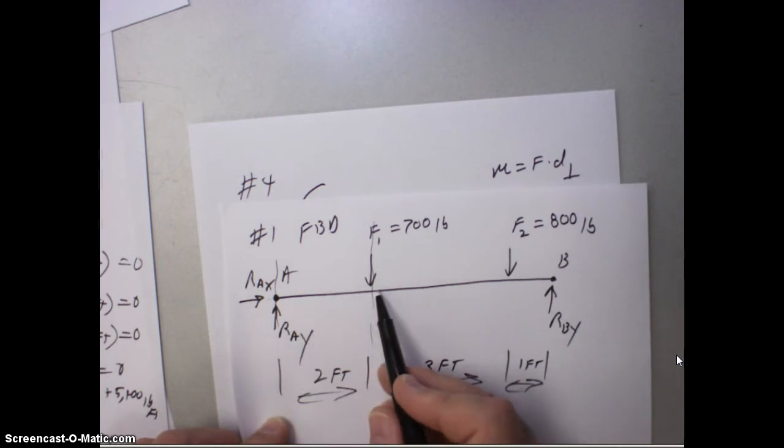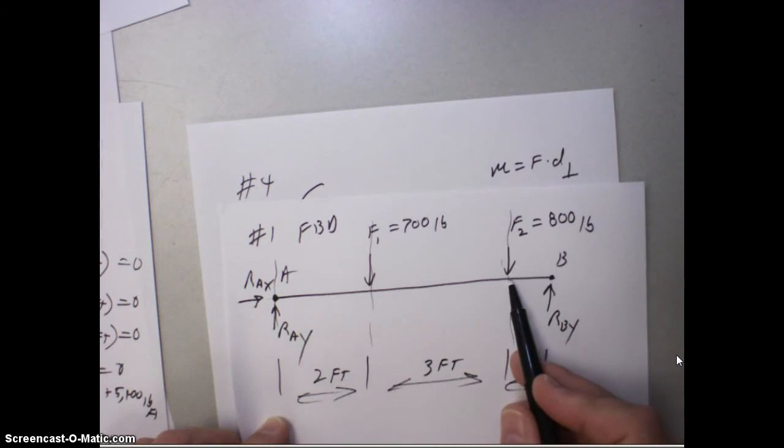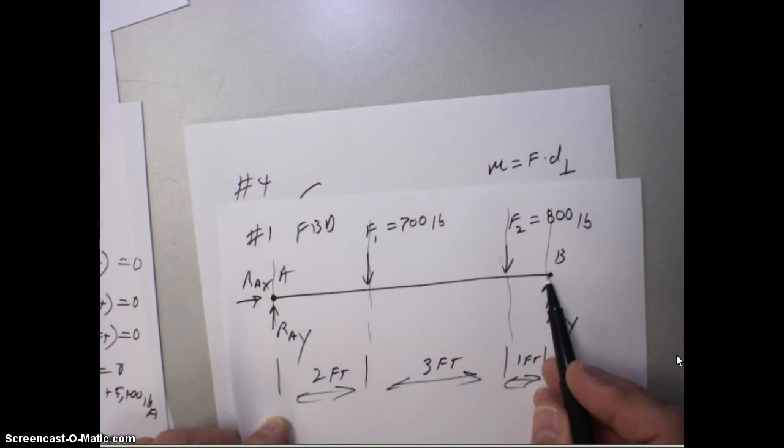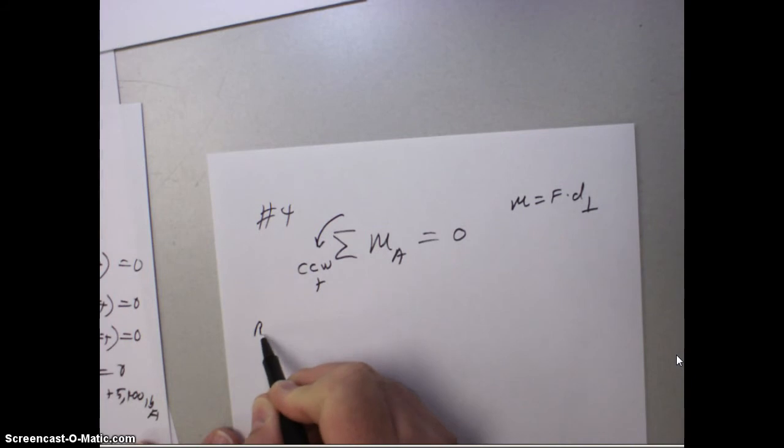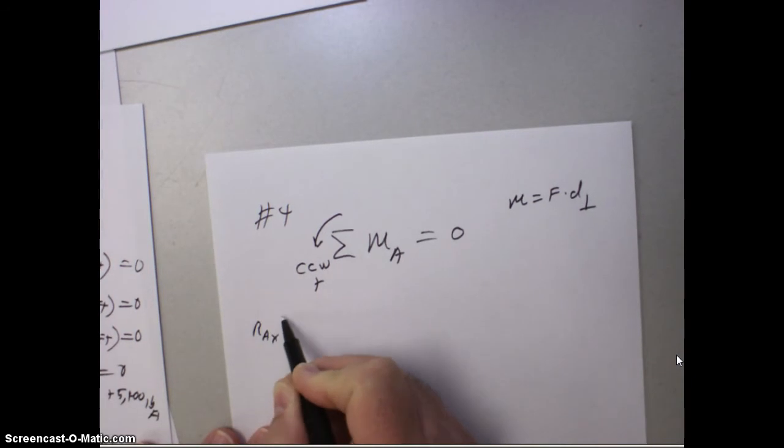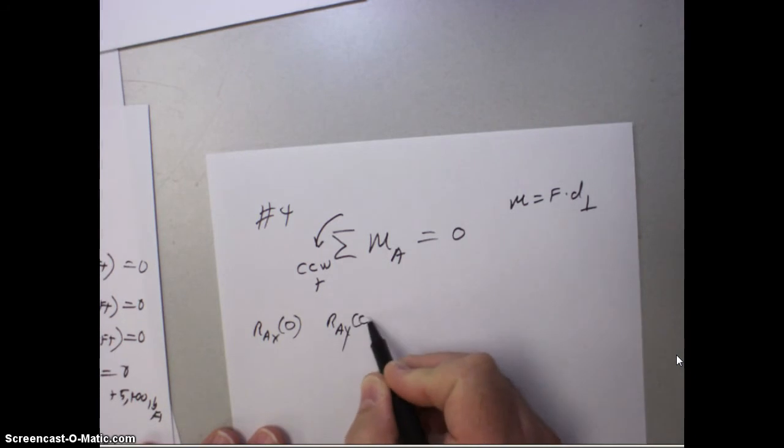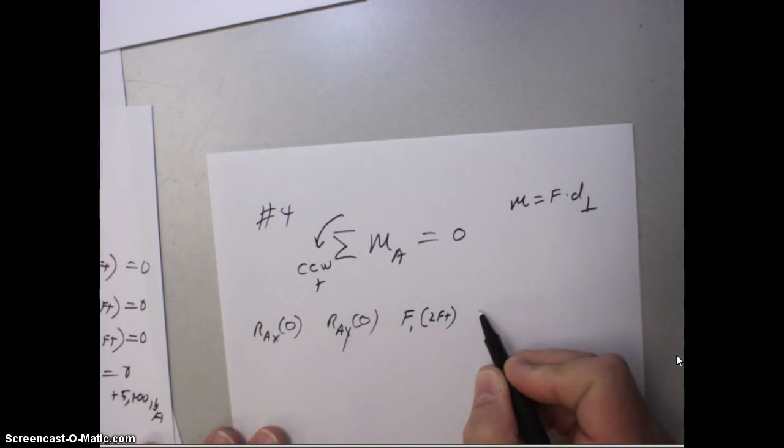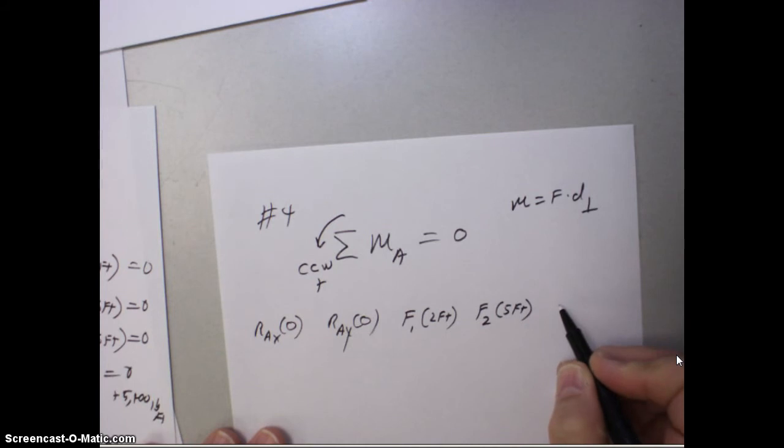Look at this line of action here, and this point, we see it's two feet. Look at the line of action of this force, we see that that is five feet, and the line of action of this force here, perpendicular distance there, is six feet. So we've got our distances, so let's go ahead and do some writing here. We've got RAX, we said that was a zero distance. We've got RAY, we said that was a zero distance. We've got F1, and we said that was two feet. We have F2, and we said that's five feet. And we've got RBY, and we said that one was six feet. And the sum of that's going to be equal to zero.